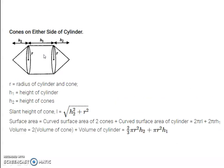Cones on either side: total surface area will be 2 × curved surface area of one cone plus curved surface area of the cylinder. Volume is 2 × volume of one cone plus volume of the cylinder. Here also, slant height should be considered: slant height of the cone is √(h2² + r²), where h2 is the altitude of the cone.